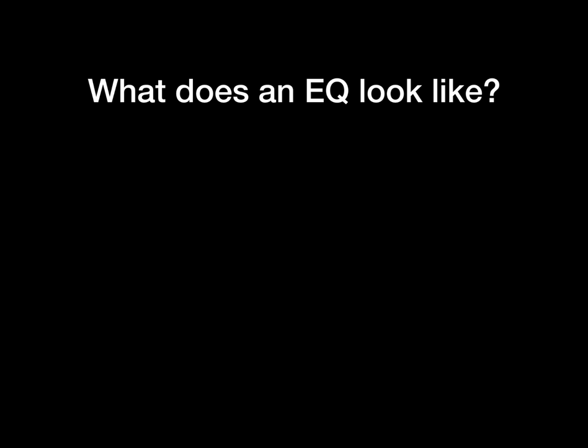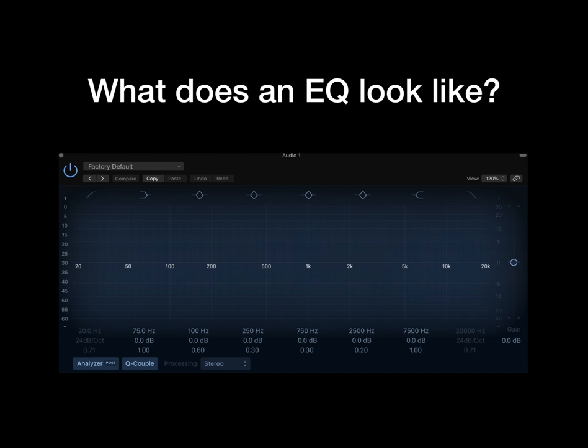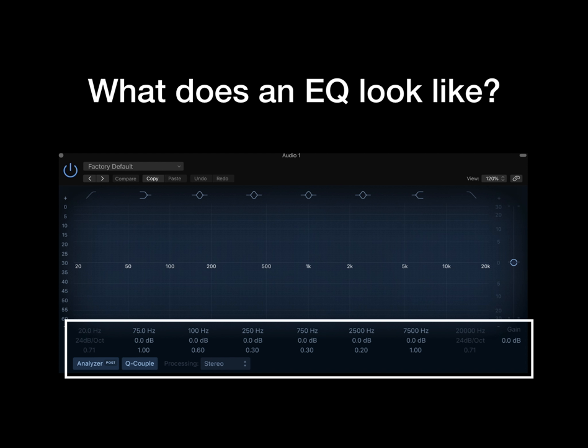There are several types of EQ. The one you will have probably seen built into your workstation is a parametric EQ, which is what I'm going to show you now. Here is the built-in plug-in from Logic Pro X. Some will differ in layout, such as the FabFilter Pro Q, but all of them do pretty much fundamentally the same thing. You can see at the bottom of the EQ there are six different frequencies — these six frequencies fall into different EQ bands, so these bands can filter out particular frequencies.